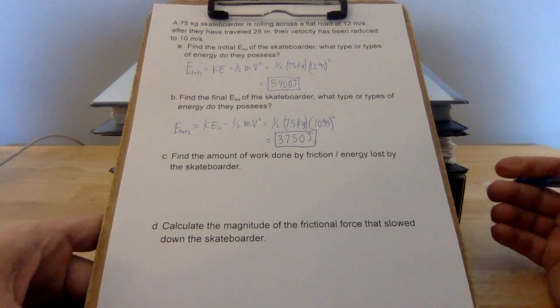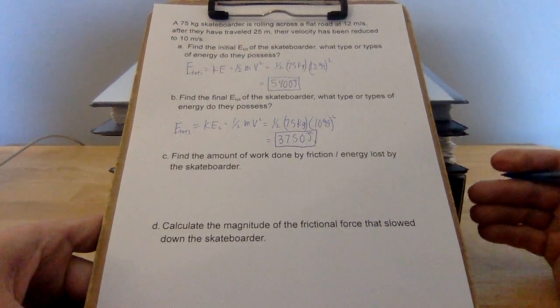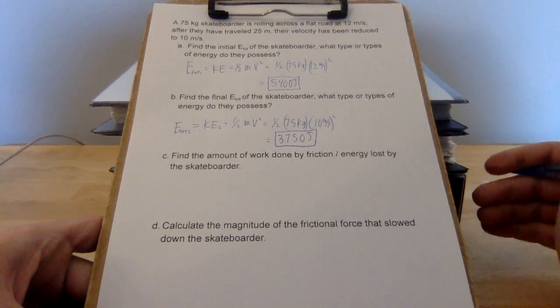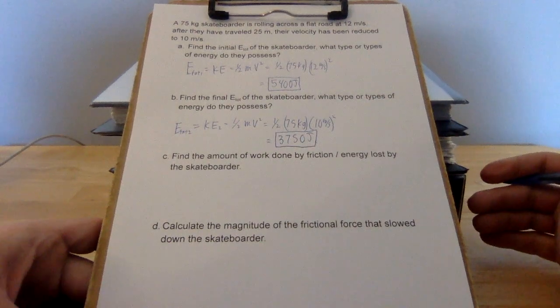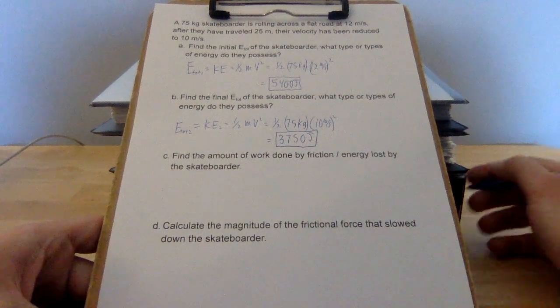Slowing down means my kinetic energy is going down. It should make sense that the skateboarder has lost energy. Losing energy would be a negative amount of work done. So in question C, where we're looking to find the amount of work, we're looking for a negative number.